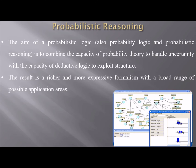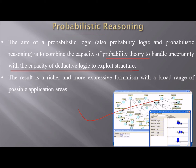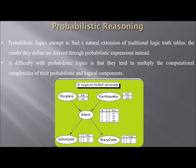The aim of probabilistic reasoning is to combine the capacity of probability theory to handle uncertainty with the capacity of deductive logic to exploit structure. The result is a richer and more expressive formalism with a broad range of possible application areas. Traditional logic truth tables are derived through probabilistic expressions. The difficulty with probabilistic logic is that it tends to multiply the computational complexities of its probabilistic and logical components.